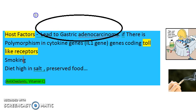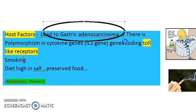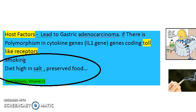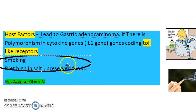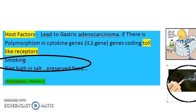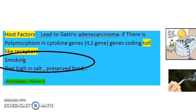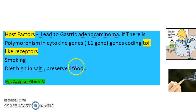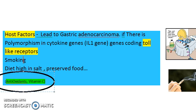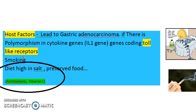Other host factors that help H. pylori create problems include smoking and a diet high in salt or preserved food, which can make H. pylori pathogenesis more aggressive. On the other hand, antioxidants and vitamin C — obtained from fresh fruits and vegetables — can protect against H. pylori.